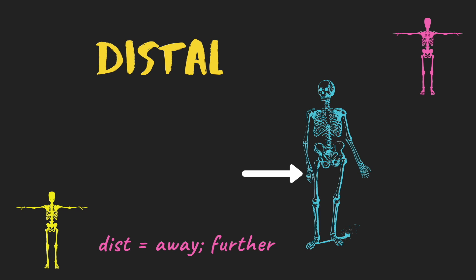Distal — nice and simple. 'Dist' means distance, further away. So if you're looking at a distal aspect of a bone or the skeleton, it's the furthest part away from the joint. The most distal part of your arm is your phalanges, and the same for your lower limbs. Comparing bones, the radius is more distal from the shoulder than the humerus — again, just because of distance.